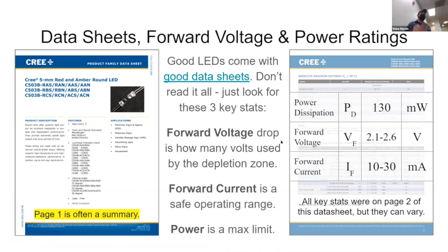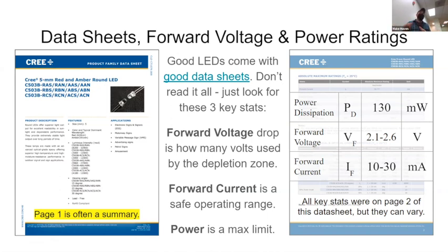Cree is a popular brand of LED manufacturer. Page one of a data sheet is usually a good summary of everything. Really there are about three key stats to any LED: power dissipation — how much power can it actually pass, around 130 milliwatts here; forward voltage — how many volts it takes to light it up, usually given as a range; and forward current — how much current it can safely handle, so 10 to 30 milliamps for this one. It probably won't light up below 10 milliamps and safely handles up to about 30 milliamps. Beyond that, you might burn out the LED.